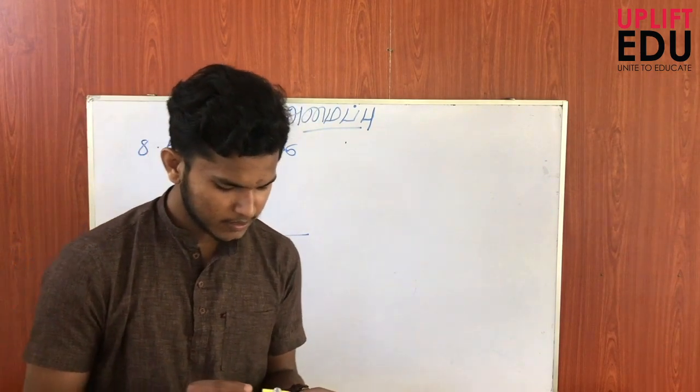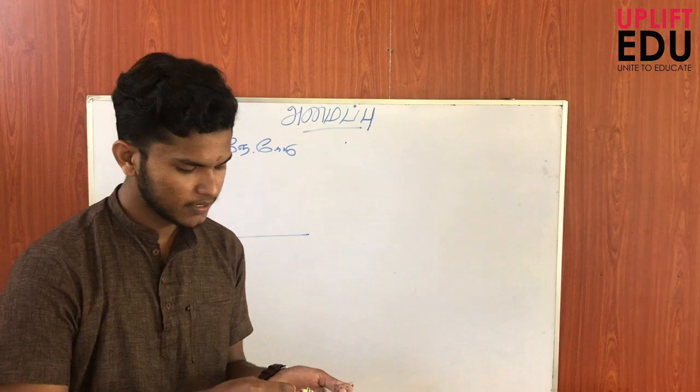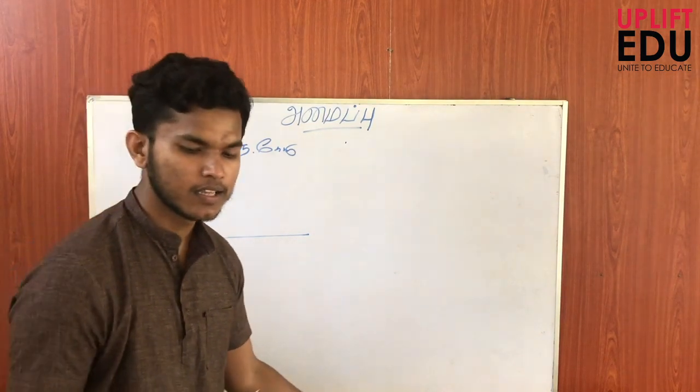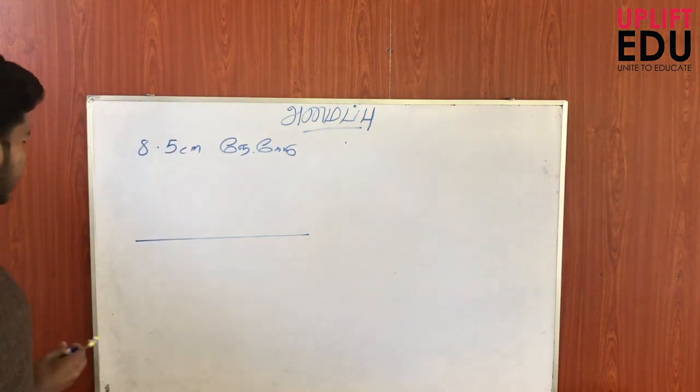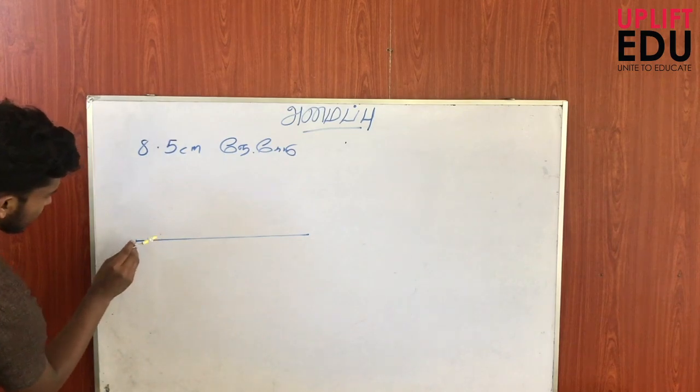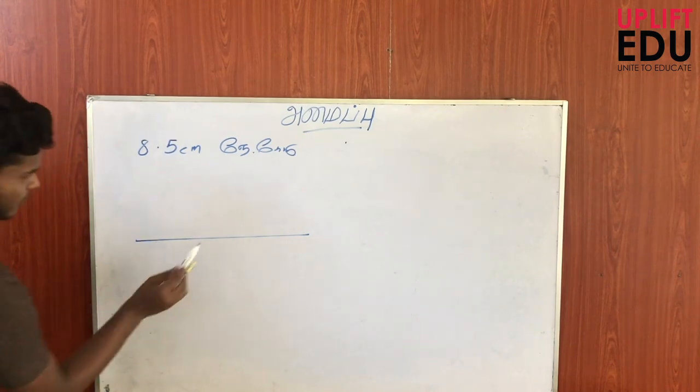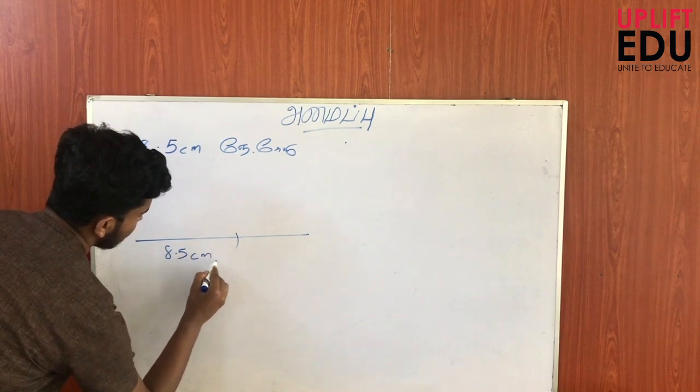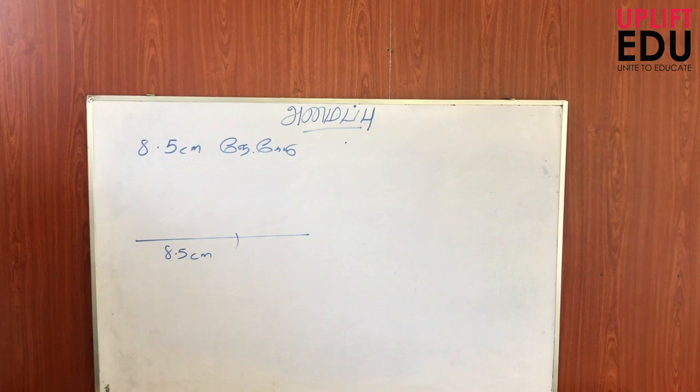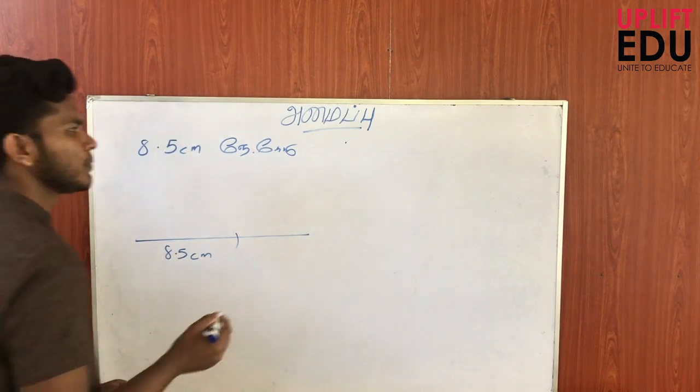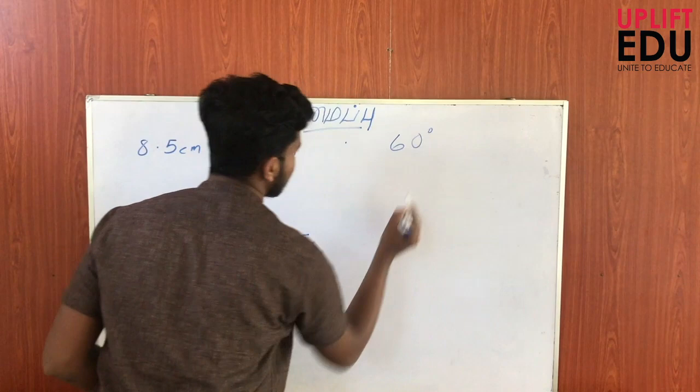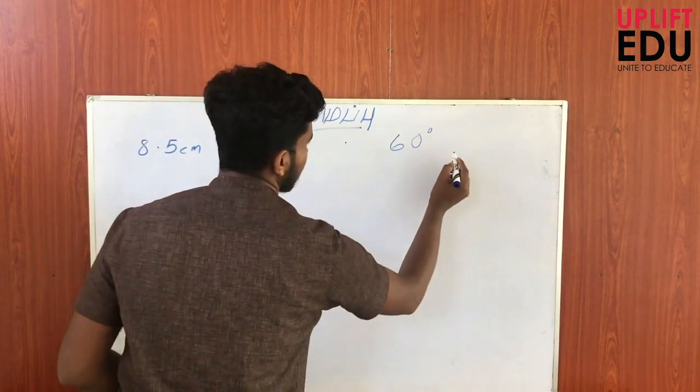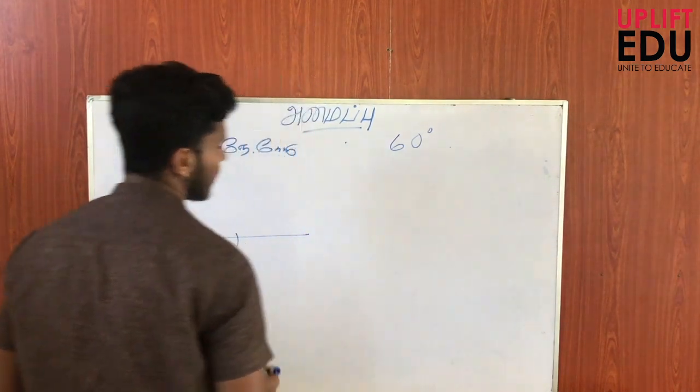The measurement is about 8.5 cm. This angle is 30 degrees. The curve is about 15 meters, and this one is about 50 meters.